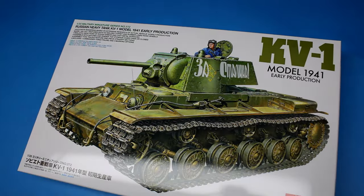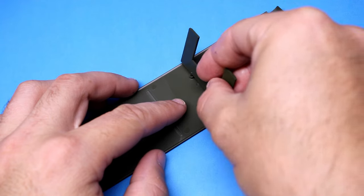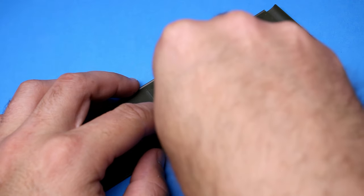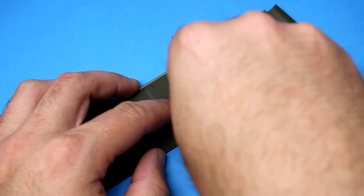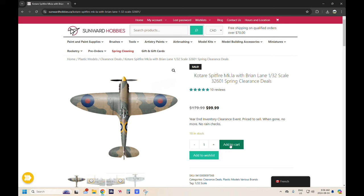Hello viewers and welcome to another episode of The Model Guy. In this special edition episode, I'm going to be hooking up with SunwardHobbies.ca to build Tamiya's KV-1 tank in 135th scale. SunwardHobbies.ca has Canada's largest selection of hobby paints, tools, and plastic kits, and they ship to most addresses in USA and Canada. And holy jumping, they're selling Kutari spits for $100. That's basically free.